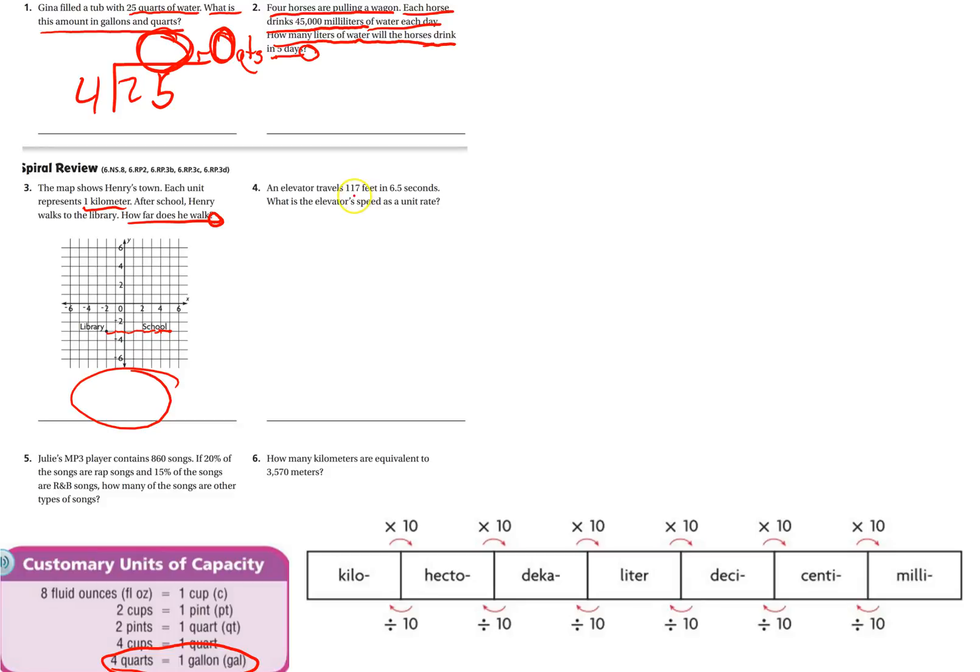Number four: an elevator travels 117 feet in 6.5 seconds. What is the elevator speed as a unit rate? So this is going back to our previous chapters. We have 117 feet to 6.5 seconds, and we want to get it to a unit rate. So I'll let you go ahead and do that math. That's where you're going to find X. That's going to be your unit rate.